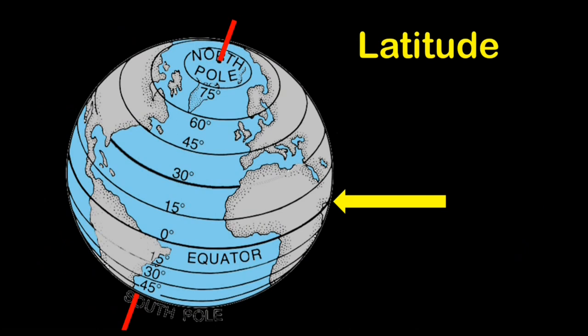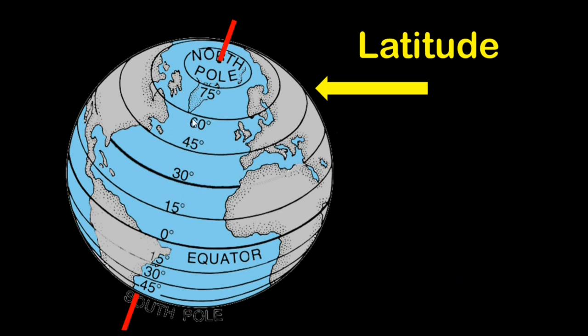Lines of latitude run perpendicular to the Earth's axis and measure how far north and south you are from the equator, the line around the middle of the Earth. Lines of latitude lie parallel to each other. Notice that as you go north and south from the equator, these circles get smaller, but they are always the same distance from each other. Lines of latitude are located by going from 0 degrees to 90 degrees from the equator to the poles. Lines of latitude are denoted as being either north or south of the equator, depending on what direction they lie.